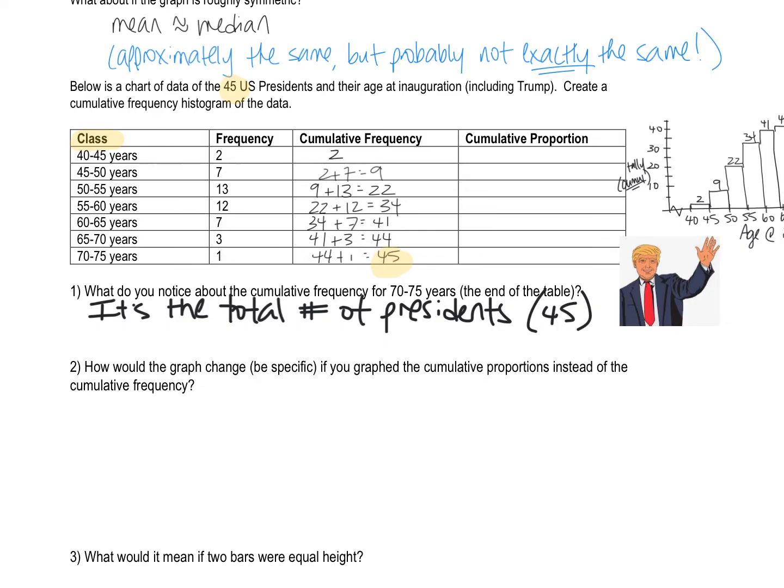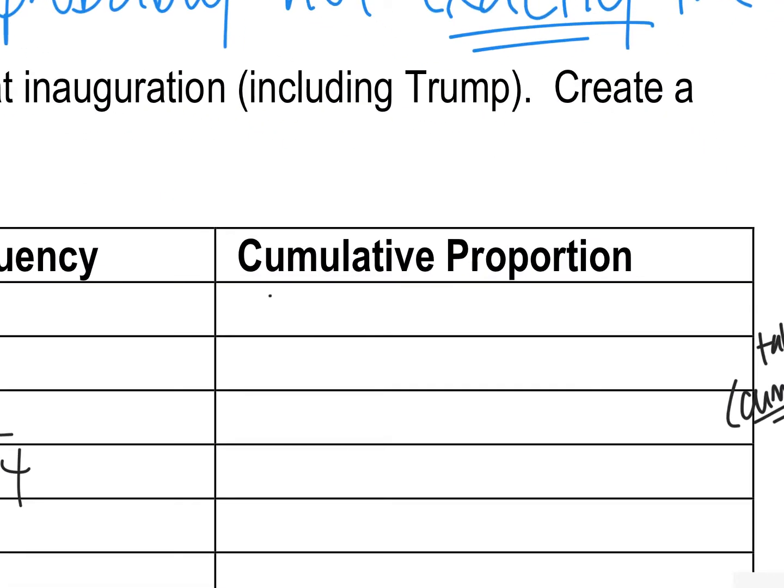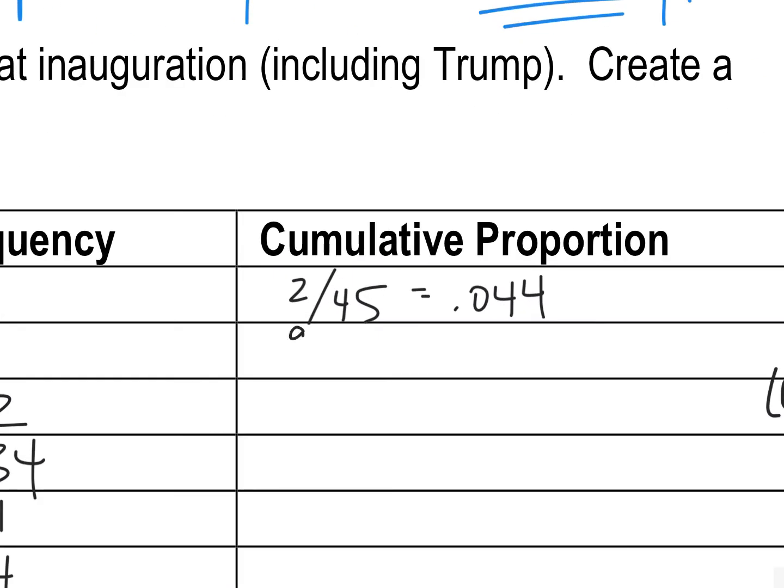The next thing I want you to do is what if I would have graphed cumulative proportions. So I haven't filled out this part yet. And what the difference between a frequency and a proportion is, is a frequency is a tally. These are whole numbers counts. They represent numbers of presidents. A proportion just represents a percentage, but it's a fraction written as a decimal. And so there are two presidents out of 45 in my very first class. So that's why I'm going to write two out of 45 here, which equals 0.044. The next one is nine out of 45.